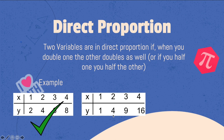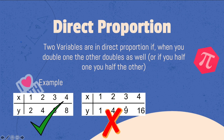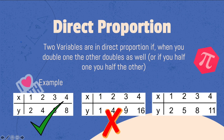On this next table, 1 doubles to get 2, but this time when we times y by 2 we don't get 4, so those two are not in direct proportion. There is another relationship going on here — some of you may spot that if you square the x value you get the number below — but it is not in direct proportion.